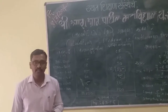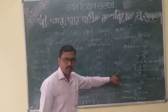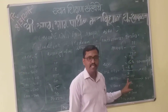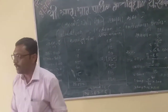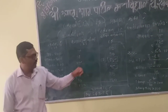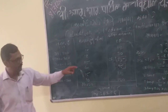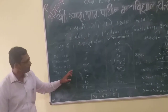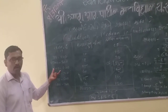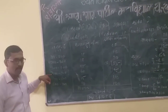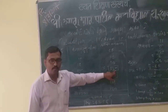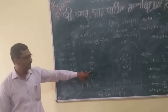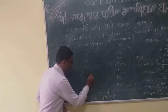Then we calculate our median by using this formula: Md is equal to L1 plus (n by 2 minus CF) divided by F, into CI. Here Md is median, L1 is the lower limit of the median class, n divided by 2 is our formula value, CF is the cumulative frequency before the median class — which is 55 — F is the frequency of the median class, here 40.